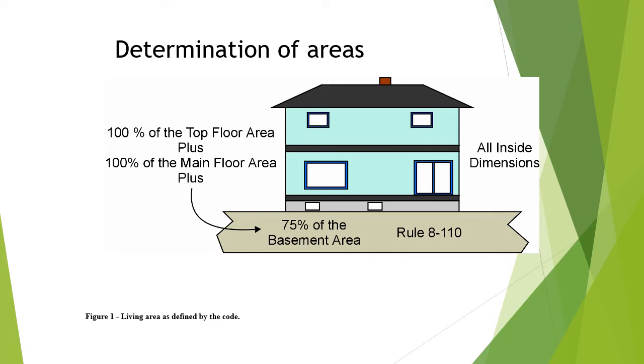We're going to be referencing Rule 8-110, and if you look at this diagram, you see that when we reference 8-110, the living area designated for 8200 and 8202 shall be determined from the inside dimensions and include the sum of 100% of the top floor plus 100% of the main floor plus 75% of the basement area.